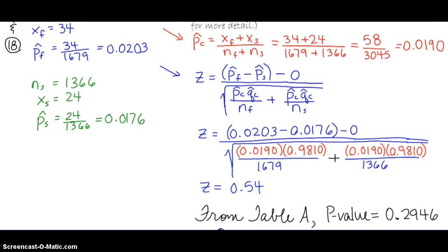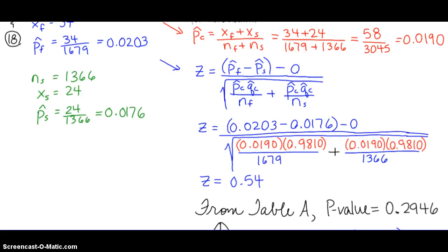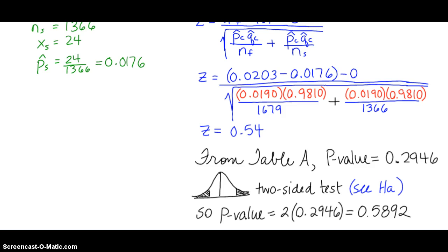Next step, we go to table A, and we find the p-value. Now if you remember, in your null hypothesis that you wrote down when we were taking notes in class, we have a two-sided test, because our alternative hypothesis was pf minus ps is not equal to zero. So what that means is, based on the p-value that we got, we need to double for the two-sided test. So our p-value is twice what we find in table A, or 0.5892.